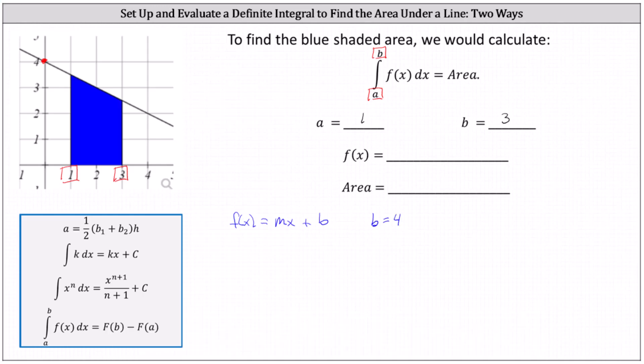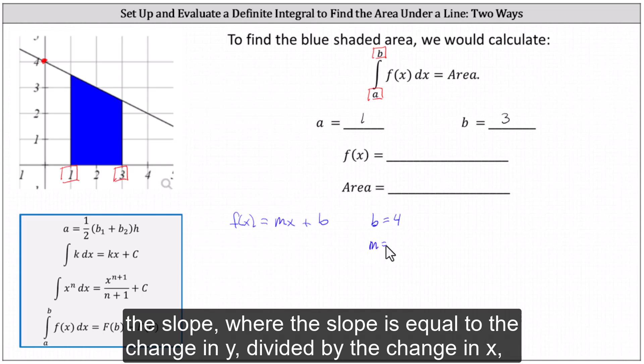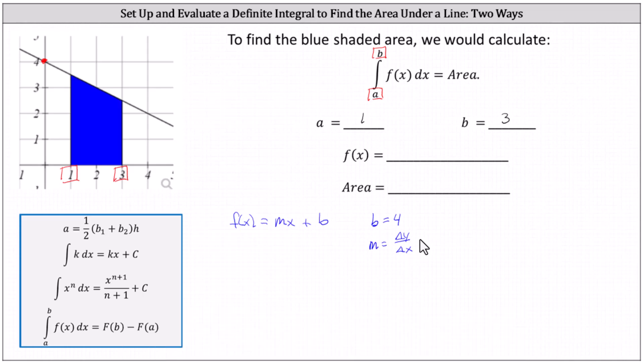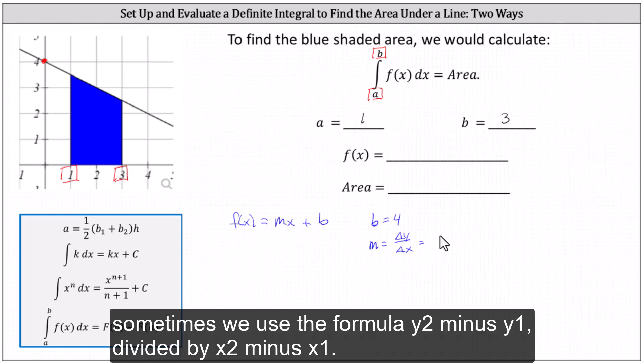And now we need to determine the slope, where the slope is equal to the change in y divided by the change in x. Sometimes we use the formula y2 minus y1 divided by x2 minus x1.